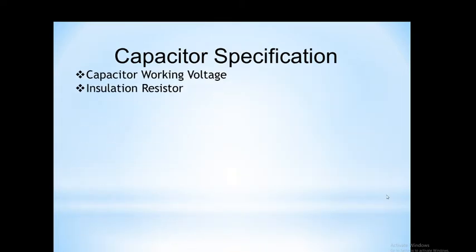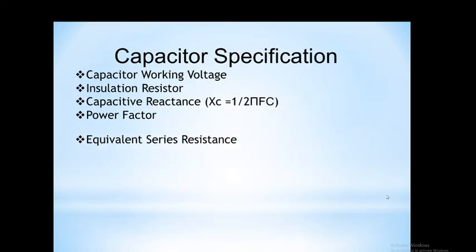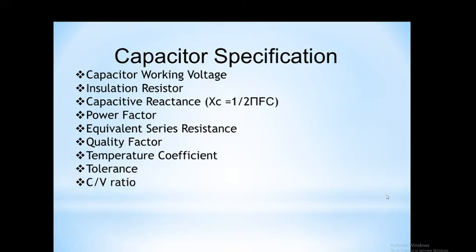Capacitor specification — working voltage. This indicates the maximum safe limit of DC voltage applied across a capacitor to prevent dielectric breakdown. If the capacitor is rated at 100 volts, it means no voltage greater than 100 volts should be applied across its plates.